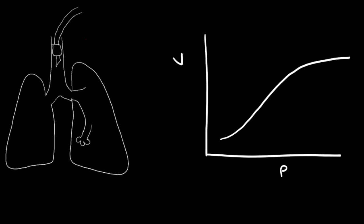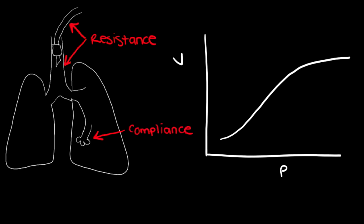In the last video, we talked about how when we deliver a breath to a patient, how much that breath distends the alveoli is dictated by the pressure-volume relationship. In reality, the pressure that we deliver with a breath gets used up in two places: some is lost in the bronchi and ventilator tubing, and what remains distends the alveoli. How much pressure is used up in the ventilator tubing and bronchi is determined by resistance, and how much the alveoli are distended by a certain pressure is determined by compliance.